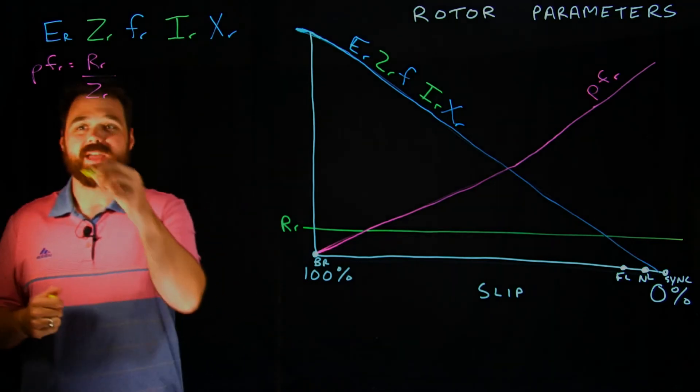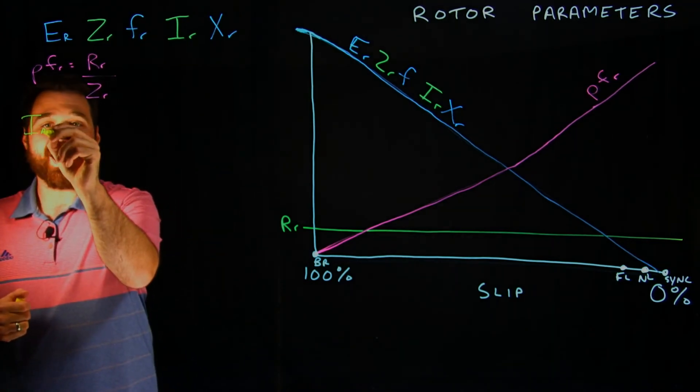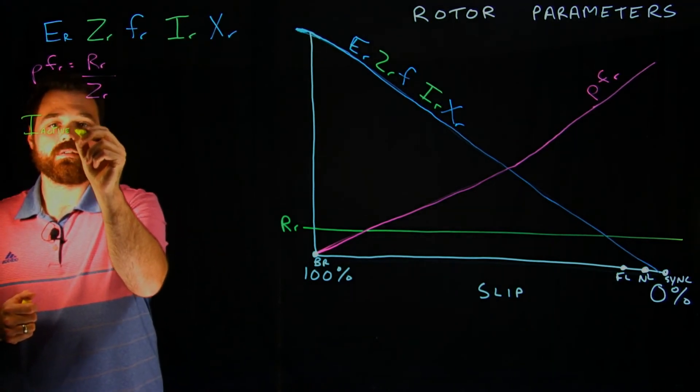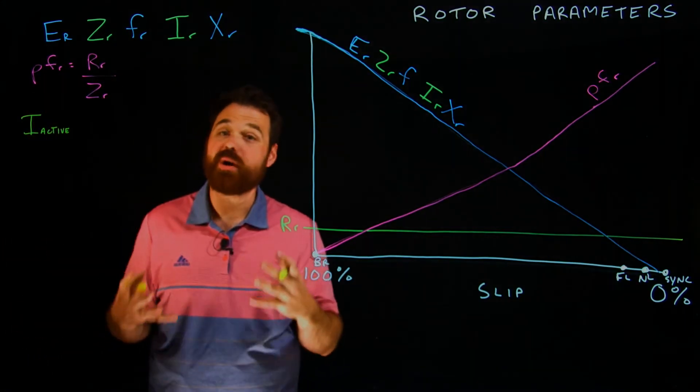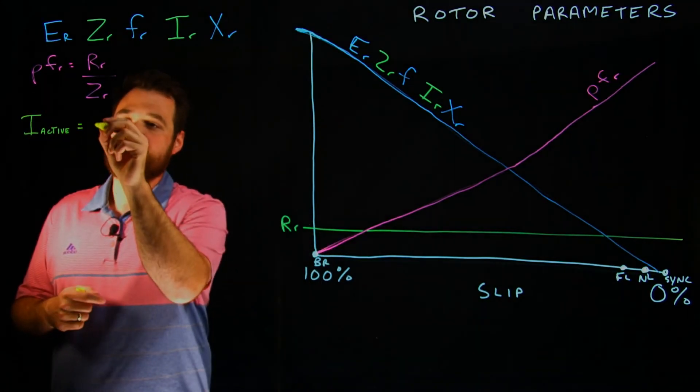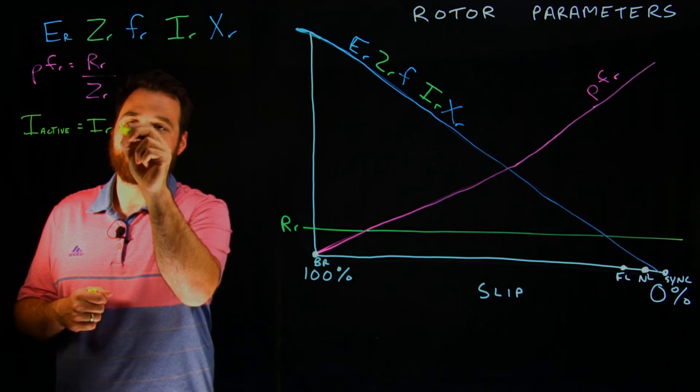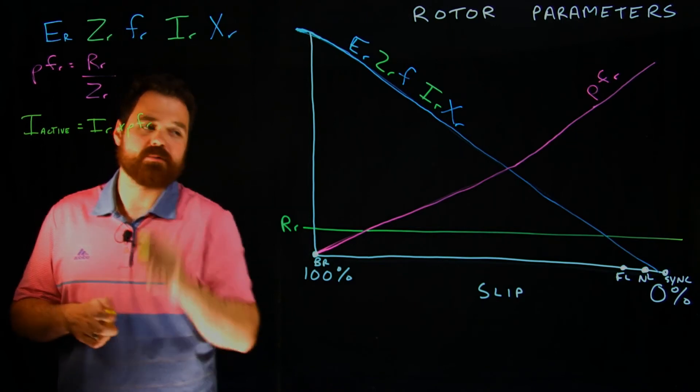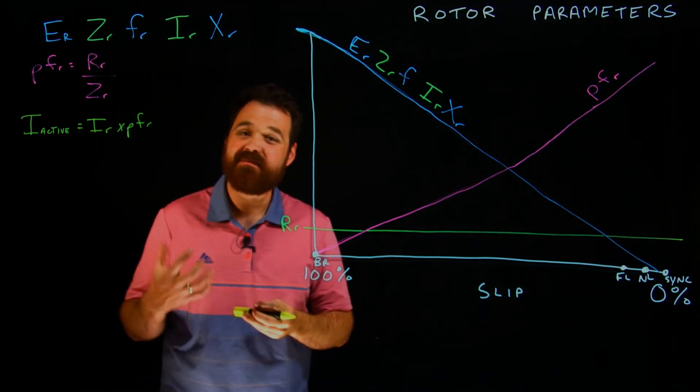So the torque is based upon the active current or active current is the current that is actually doing the work, is just the rotor current times the power factor of the rotor. It's the in phase current.